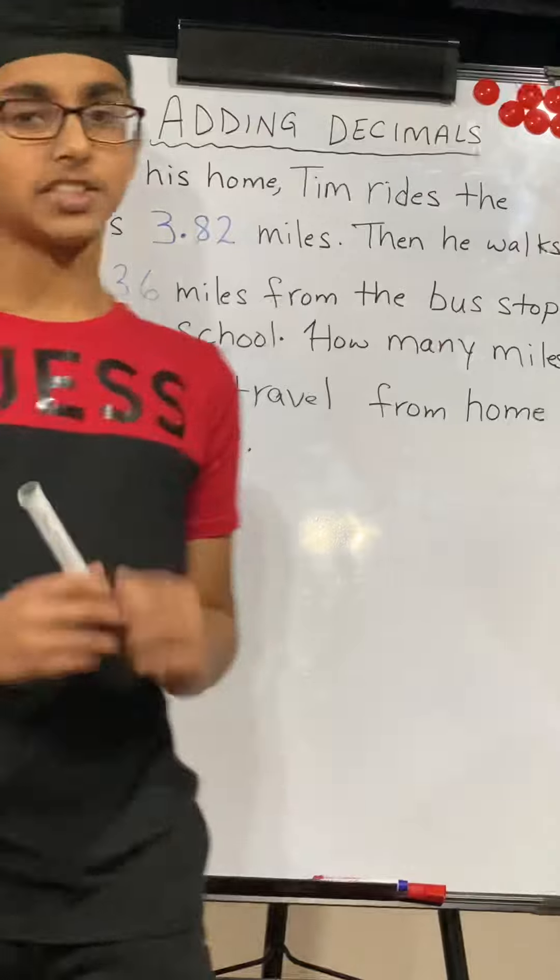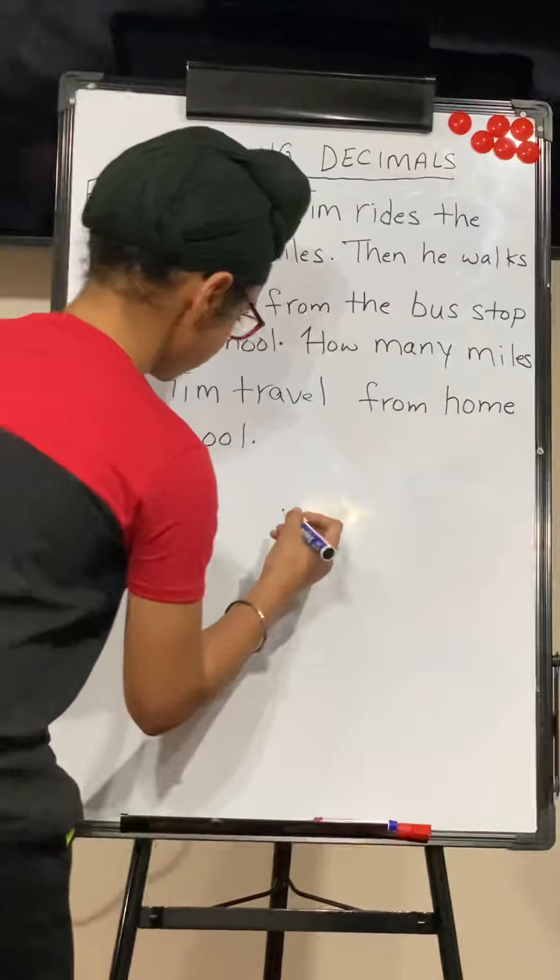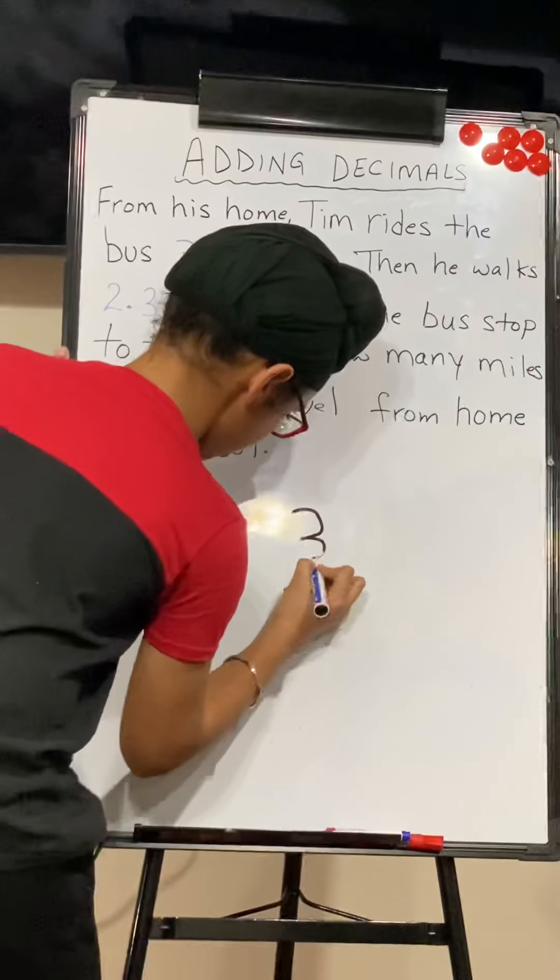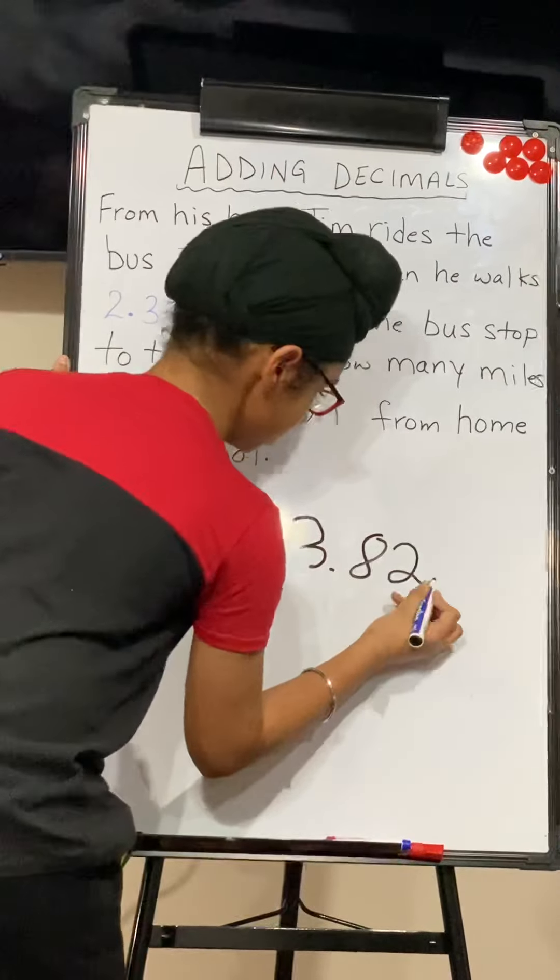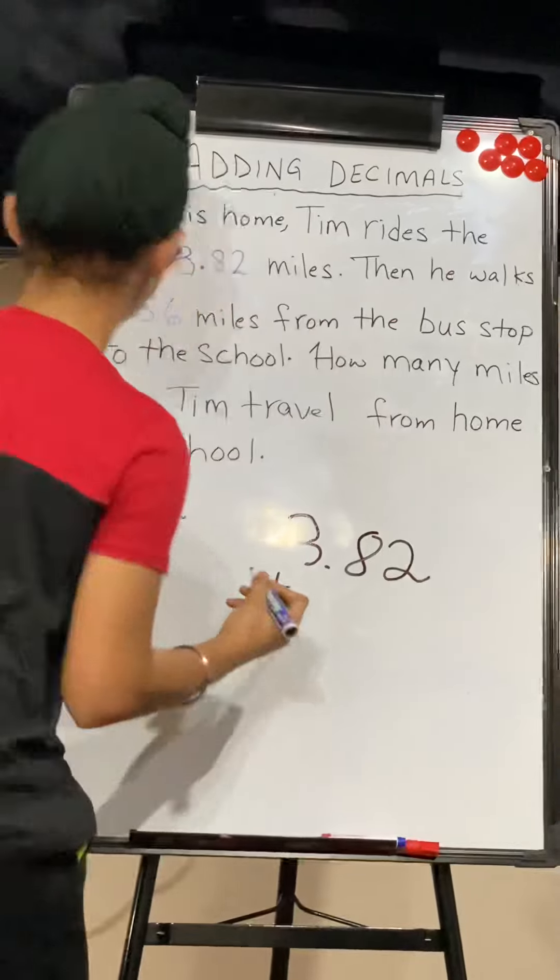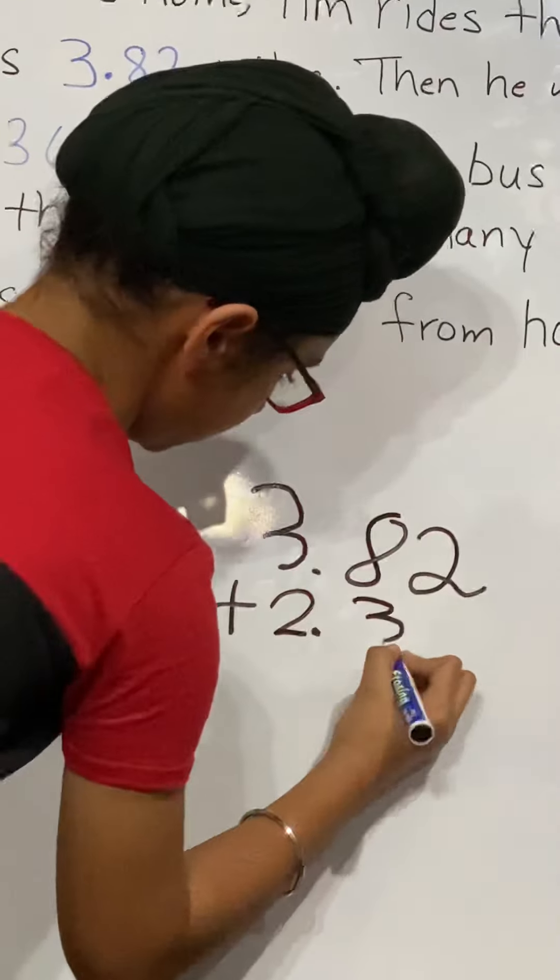Well, to figure this out, we're going to add both decimal numbers. So this means, this will be 3.82 plus 2.36.